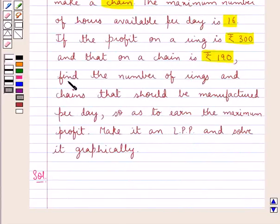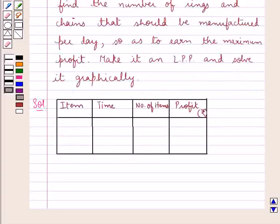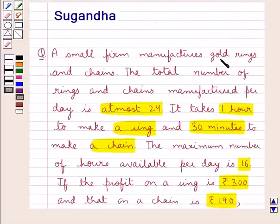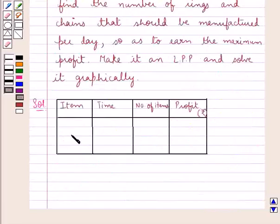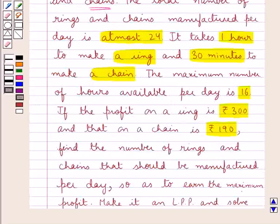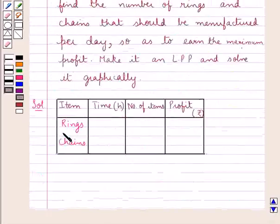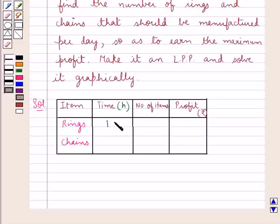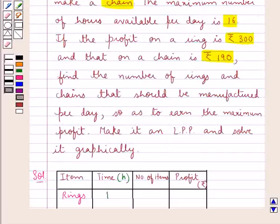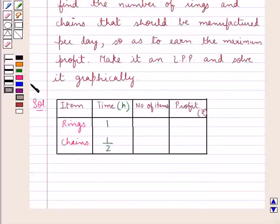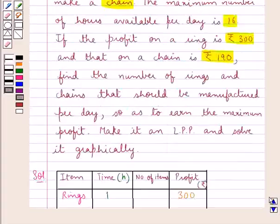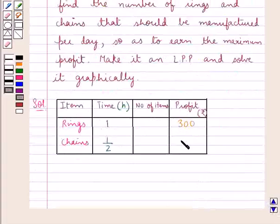Let us note the given data in tabular form. The two items are rings and chains. It takes 1 hour to make a ring and 30 minutes, that is half an hour, to make a chain. The profit on a ring is Rs. 300 and the profit on a chain is Rs. 190.